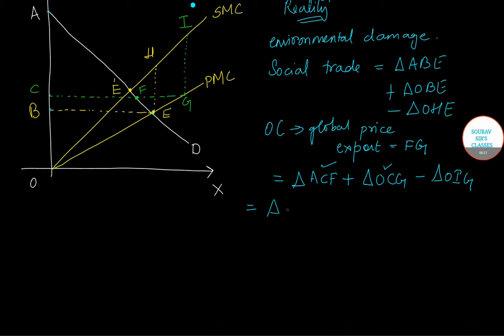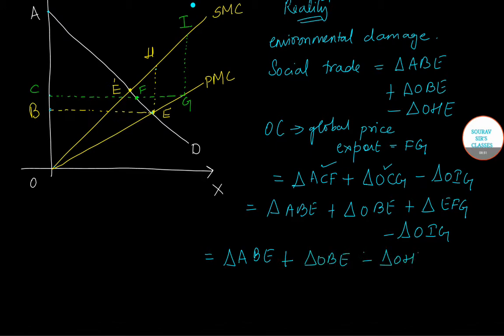Now this ACF which we have written and this term, we will do a little bit of substitution. So in place of this I'll write triangle ABE plus triangle OBE plus triangle EFG less triangle OIG. Further you can write it as triangle ABE plus triangle OBE minus triangle OHE plus triangle EFG minus the area of EHIG.